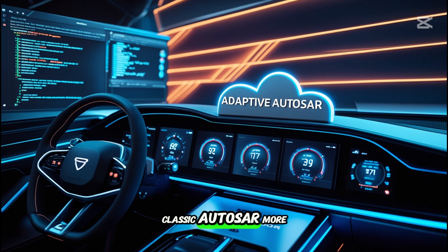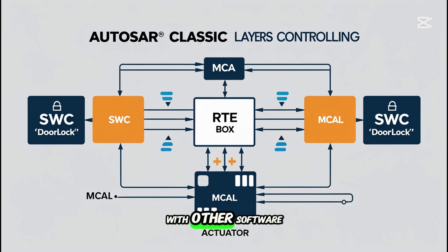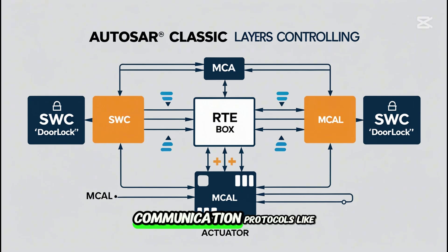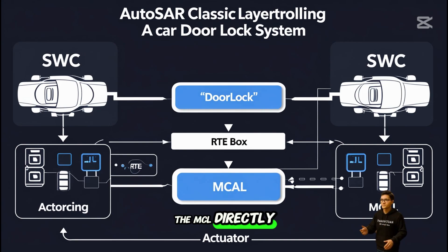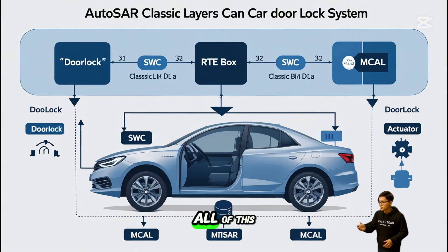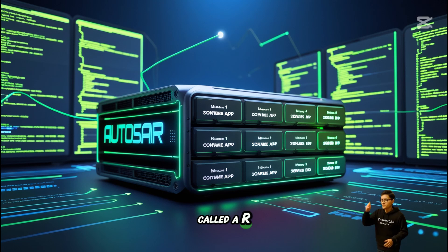Let's look at Classic Autosar more closely. Imagine you want to control a car door lock. First, you build a software component, or SWC, that defines inputs and outputs. Then the RTE connects your component with other software modules. Below that, the basic software handles drivers, communication protocols like CAN or LIN, memory access, and diagnostics. And at the bottom, the MCAL directly controls the hardware. All of this is configured using tools like Vector DaVinci or EBTresos, which generate standardized files called ARXMLs.